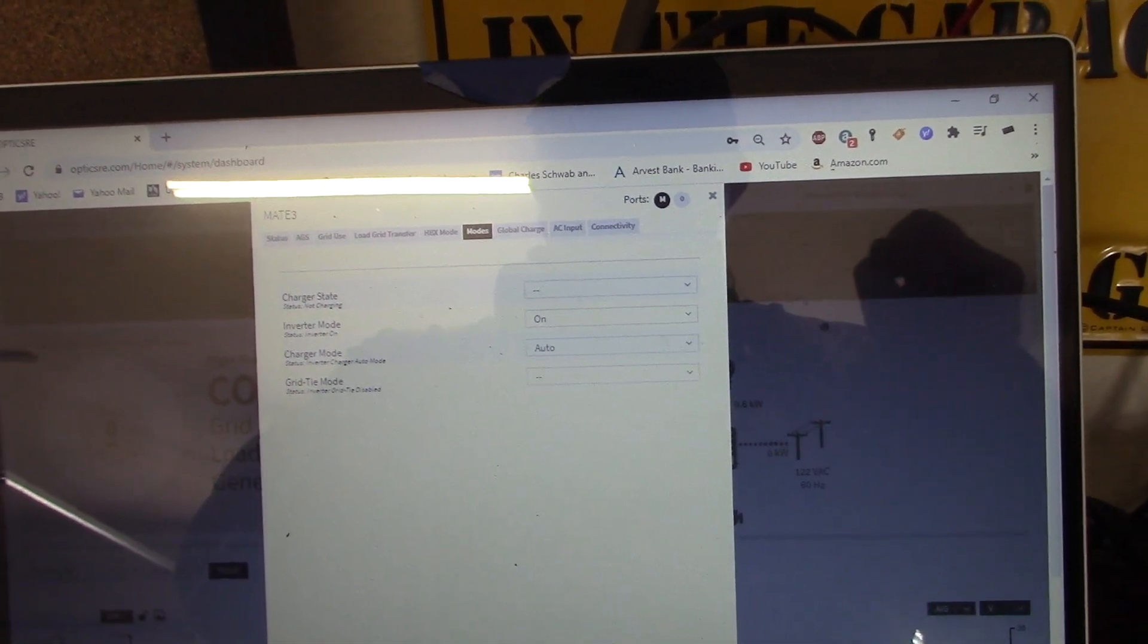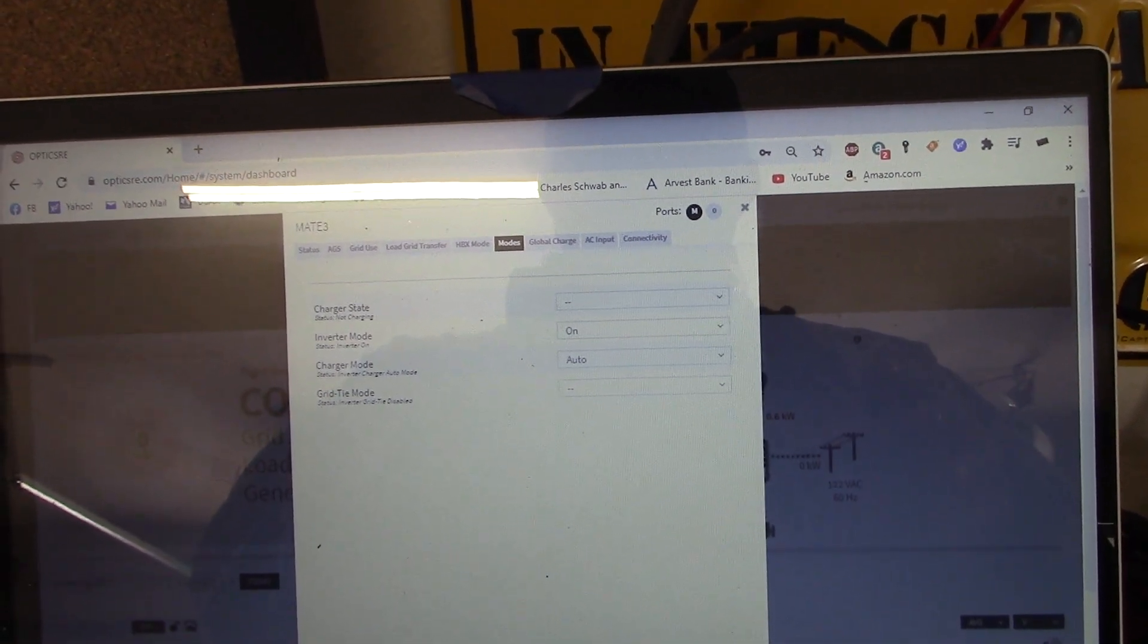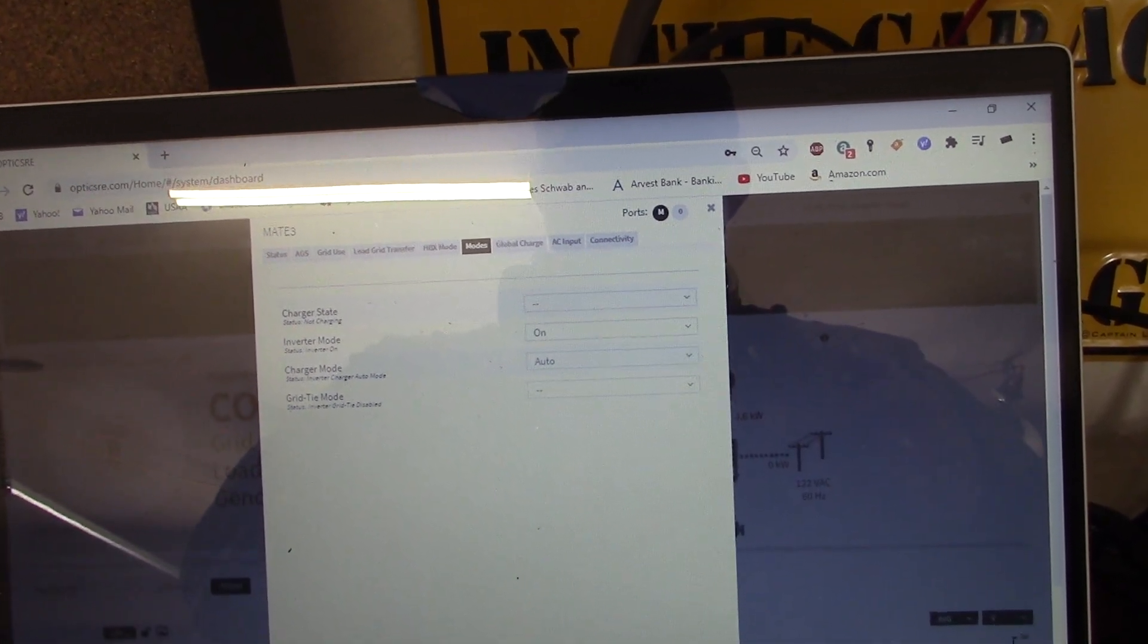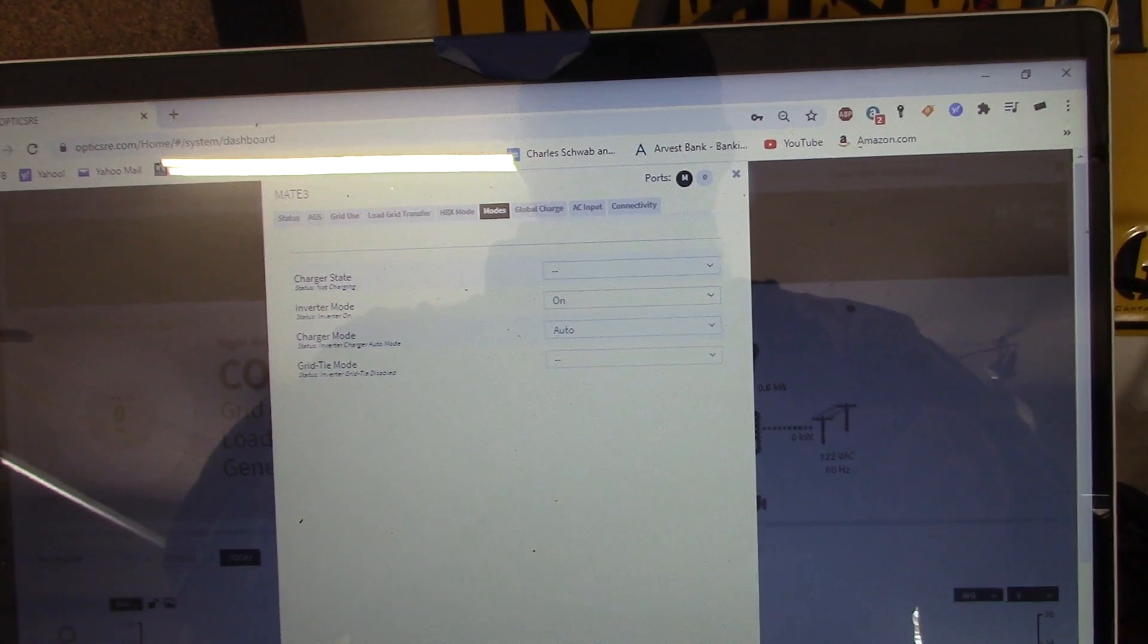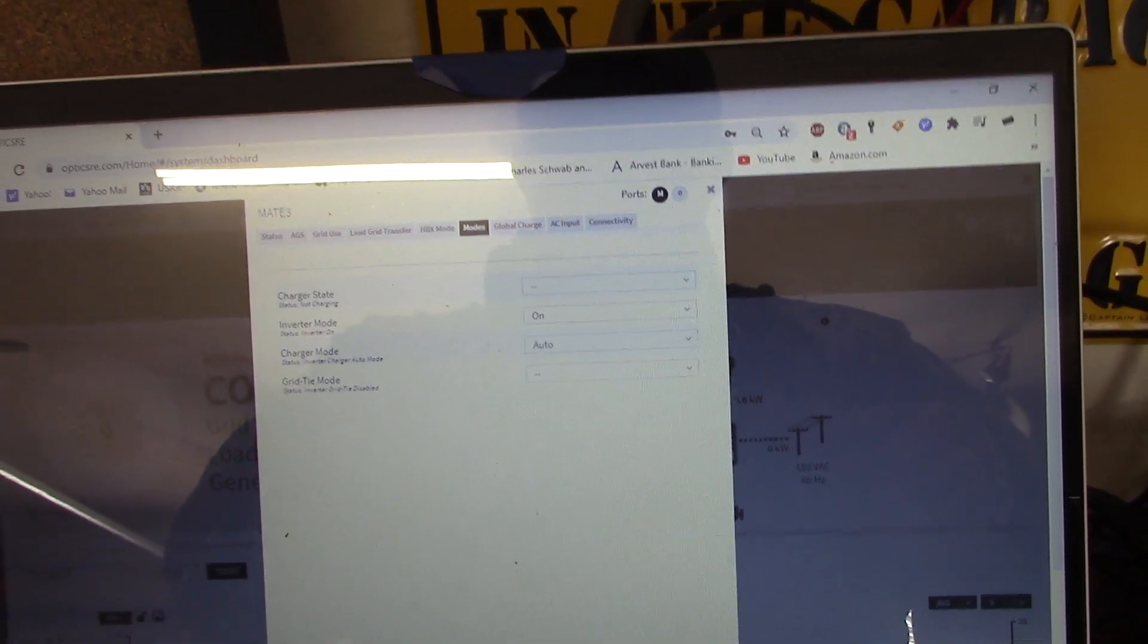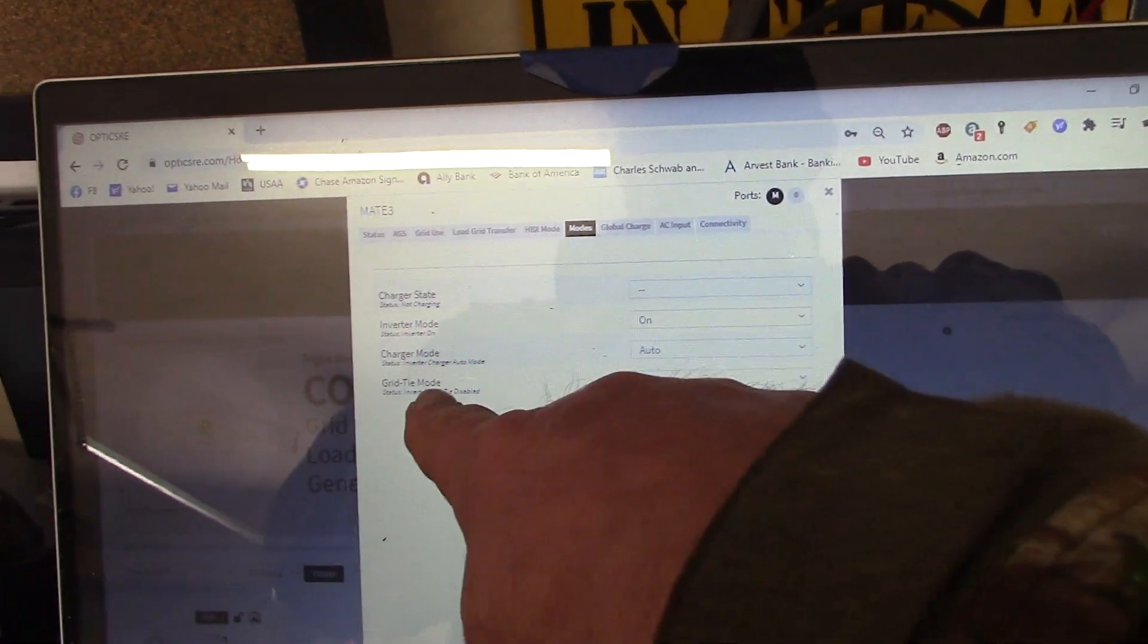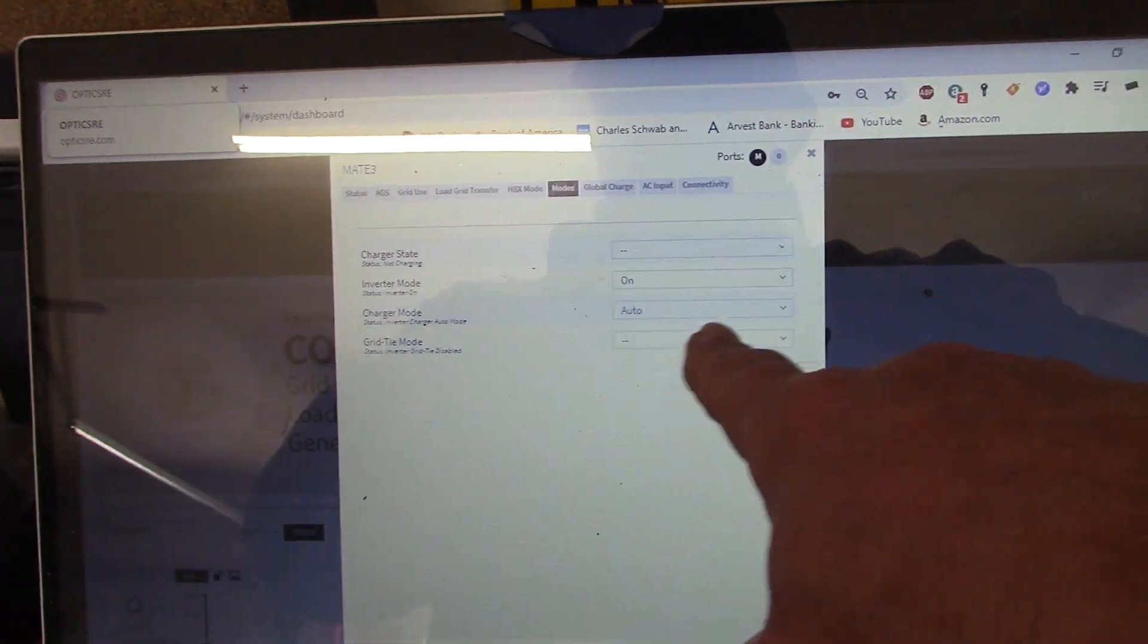And they weren't talking to each other. It was kind of manually you had to go and put it in drop AC and charge. Then automatically go back to inverting when it hits full charge. But I wanted to do it automatically. And this is where I screwed up. The charger mode on the Mate 3 has to be in auto mode.